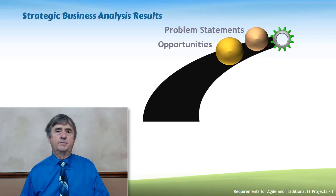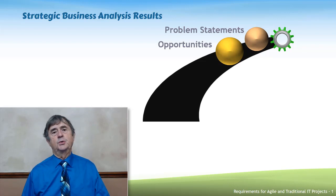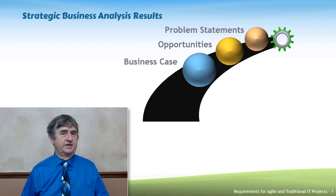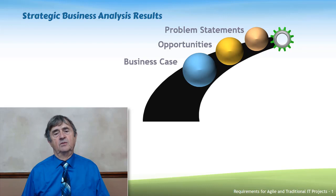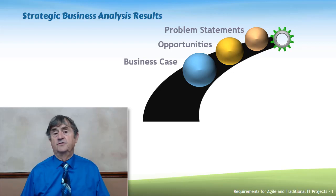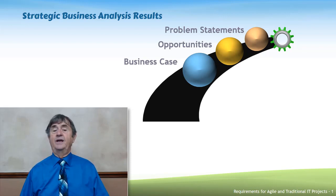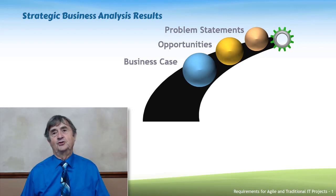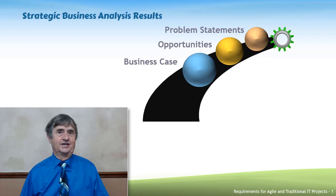The ultimate purpose of strategic business analysis is to create what we call a business case — a decision-making document or tool. It doesn't have to be documented; it can be verbal, diagrams, or any manner. The business case talks about what should change in the organization, the benefits of the change, and the costs of the change. It provides whoever has decision-making authority with the information they need to make an informed decision.